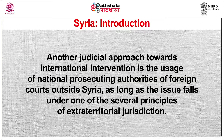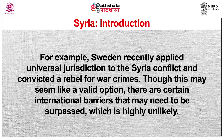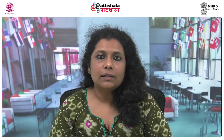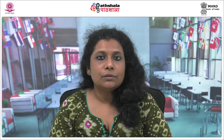Another judicial approach is the use of national prosecuting authorities of foreign courts — courts outside of Syria — as long as the issue falls under one of several principles of extraterritorial jurisdiction. For example, Sweden recently applied universal jurisdiction to the Syria conflict and convicted a rebel for war crimes. Though this may seem a valid option, there are clear international barriers to surpass, which is highly unlikely. Sovereign immunity shields most high officials, while difficulties may arise in trying suspects in absentia, and international actors will question the quality and quantity of evidence.